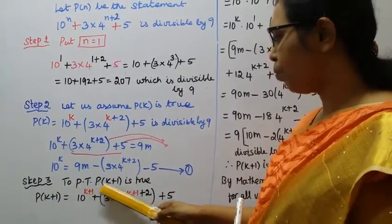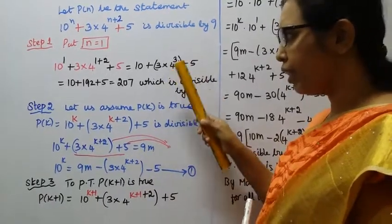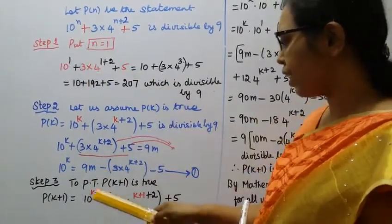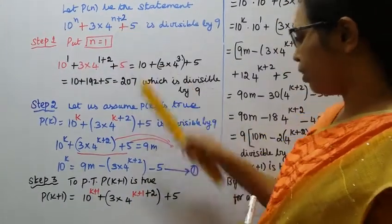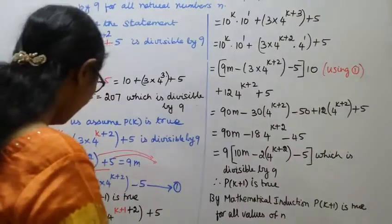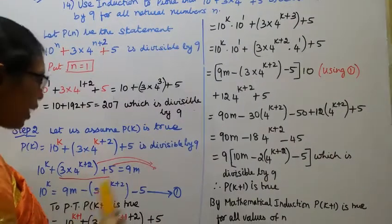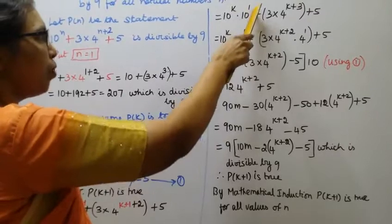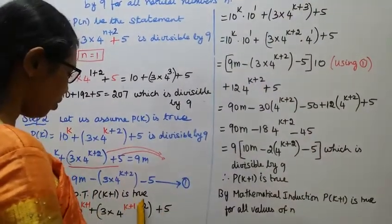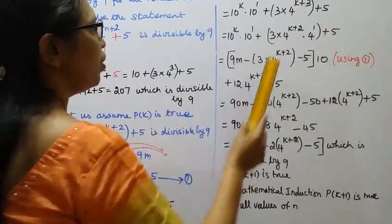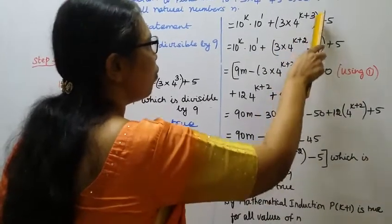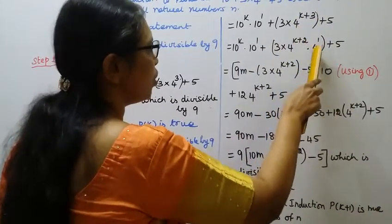Step 3, to prove that P(k+1) is true. P(k+1): 10 power k plus 1 plus 3 into 4 power k plus 1 plus 2 plus 5. Prove it is divisible by 9. 10 power k plus 1 is 10 power k into 10.